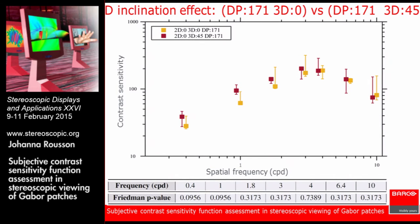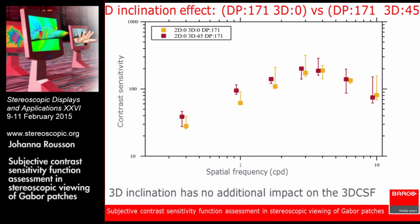Comparing conditions under 3D visualization with an added 45-degree 3D inclination, the medians suggested there might be an increase in sensitivity due to the added inclination, but this was not confirmed by significance testing. A subsequent study with a 60-degree inclination using new observers showed no such tendency, and the null hypothesis was not rejected for all frequencies. Apparently, adding a 3D inclination does not produce additional impact on the 3D CSF.